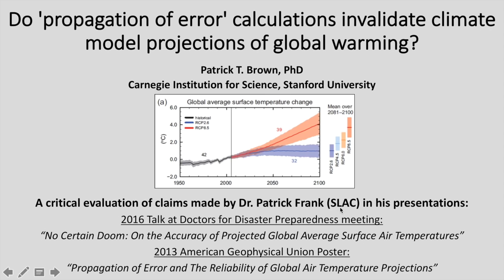who is a scientist at the Stanford Linear Accelerator Center. Dr. Frank has made a number of publicly available writings and presentations where he argues that climate model projections of global warming are essentially useless. I'll be pulling primarily from two presentations: a talk he gave at the Doctors for Disaster Preparedness meeting called 'No Certain Doom on Accuracy of Projected Global Average Surface Air Temperatures,' and a 2013 AGU poster called 'Propagation of Error and the Reliability of Global Air Temperature Projections.'